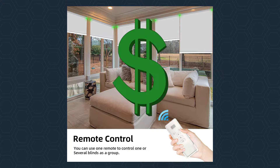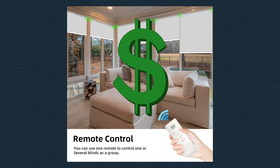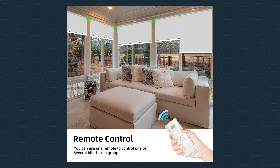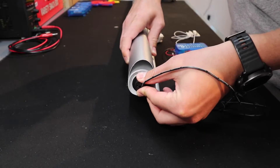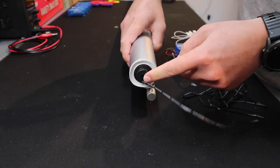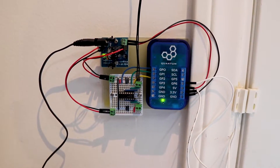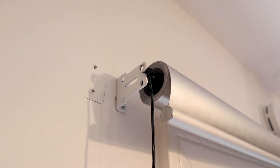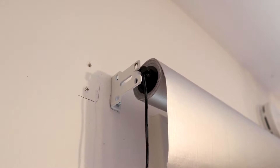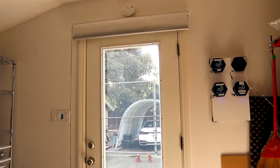Standard motor shades are expensive and the only way to control them is with the provided IR remote. Smart shades are even more expensive and lack the ability to customize how I automate when the shades should be opened or closed. So I've decided to build an inexpensive and highly customizable motorized shade for the entrance of my workshop that can be opened and closed using the quantum system and cheap parts you can find easily online.